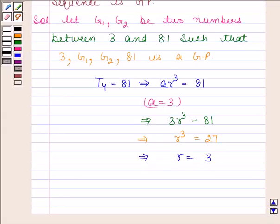Now since A is the first term and R is the common ratio, therefore the second term, that is G1, equals A times R. Now A is 3 and R is also 3, so this equals 9. And G2 equals A R squared.